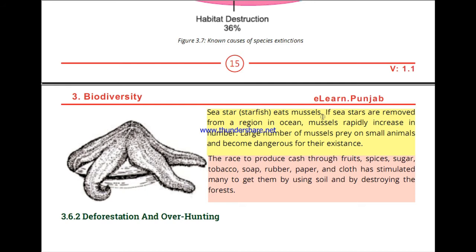When this introduced water plant spread, the population of algae and other water organisms increased rapidly. This led to an imbalance — native species were outcompeted and pushed toward extinction, negatively impacting the overall biodiversity of the aquatic ecosystem.